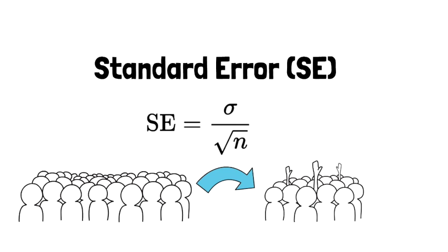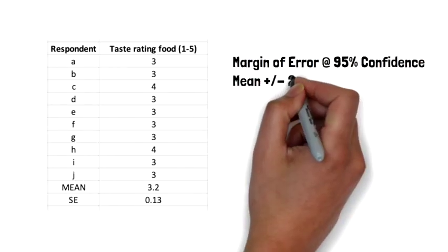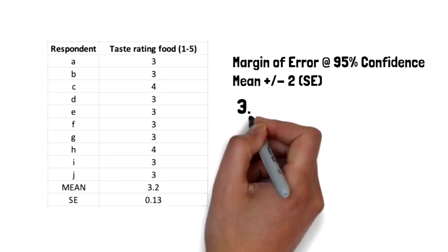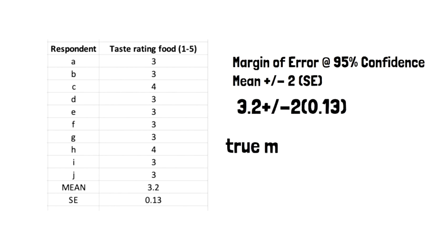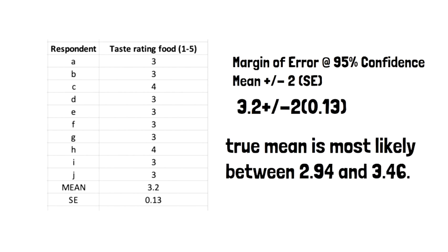The margin of error at 95% confidence for our mean is approximately twice the value of standard error. The margin of error at 95% confidence tells us that the mean is plus or minus two times the standard error. Putting these values together, we figure out the true mean is most likely between 2.94 and 3.46.